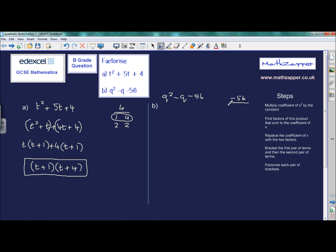Find the factors of this product that sum to the coefficient of x, or the coefficient of q in this case. So let's find the factors. This time, 1 will be plus and 1 will be minus because we have a negative product. You can only get a negative product from one negative and one positive number.